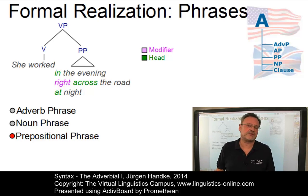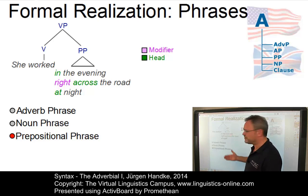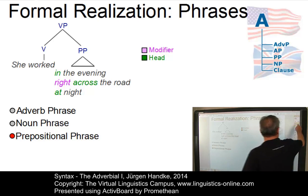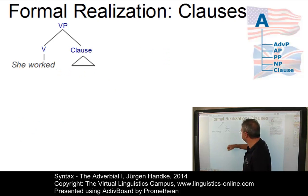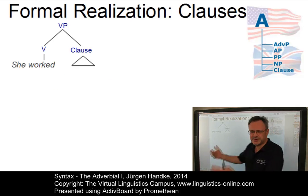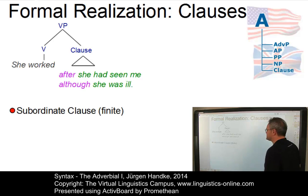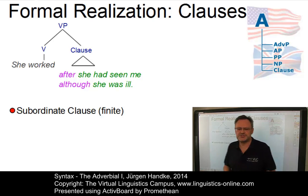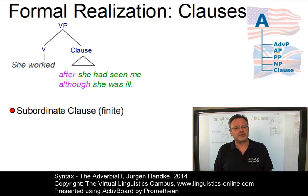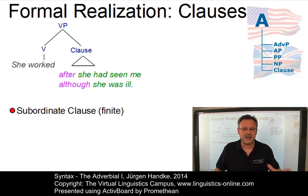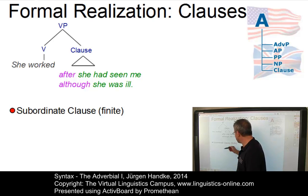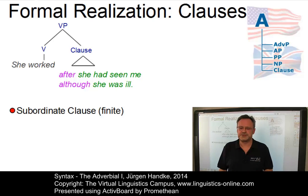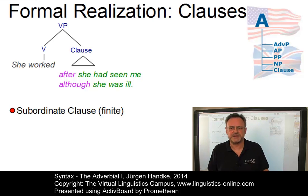Apart from these phrasal categories, adverbials can be realized by clausal elements ranging from finite to verbless. Here are some examples — again taking our sentence fragment, this time inserting clausal structures into the empty slot. The first is the finite subordinate clause, such as 'she worked after she had seen me' or 'she worked although she was ill.' Finite subordinate clauses are introduced by a conjunction that signals the type of semantic relationship denoted by the adverbial — for example, temporal (the conjunction 'after') or concessive ('although she was ill'). Further semantic relations include causal, hypothetical, manner, purpose, and so on.